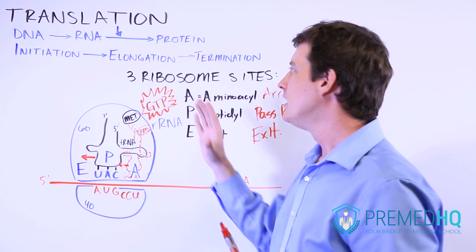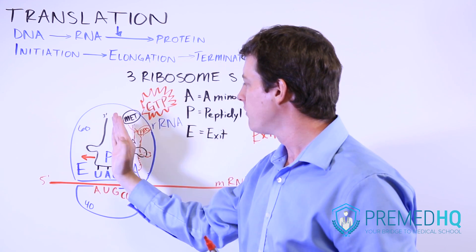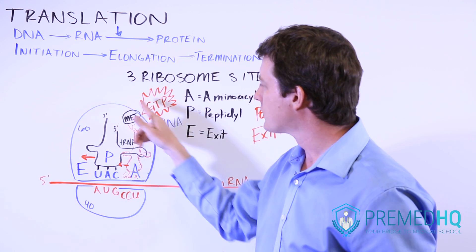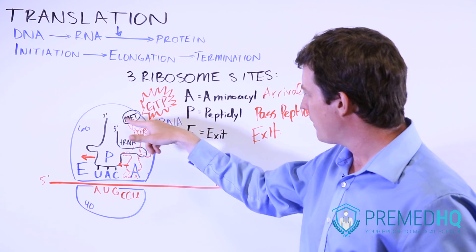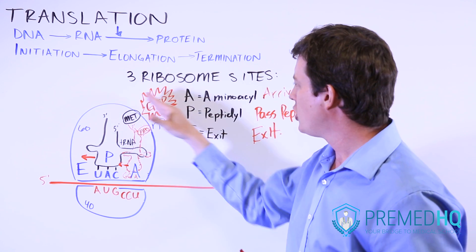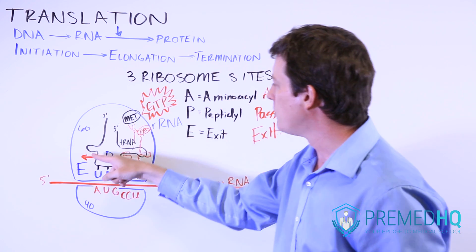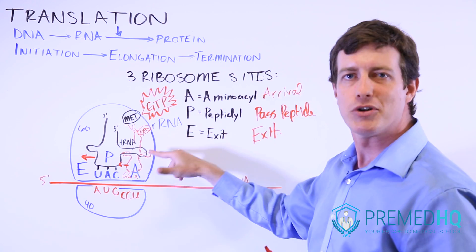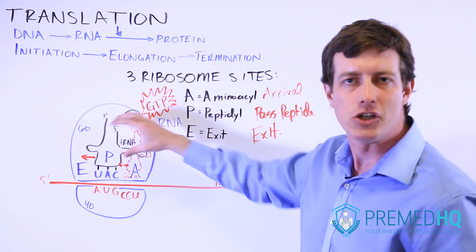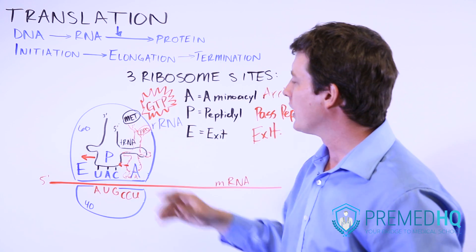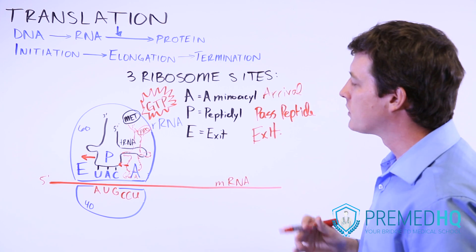And so what happens during the elongation process is that whatever one is in the P site is going to be the one that holds this peptide chain, this chain of amino acids. And as the P site moves over to the E site, it will pass it over to its neighbor in the A site, which will be the new occupant of that peptidyl position. And so this continues on and on.